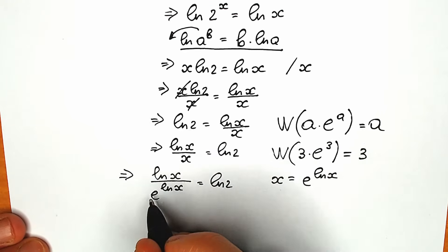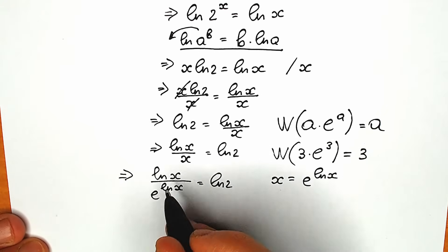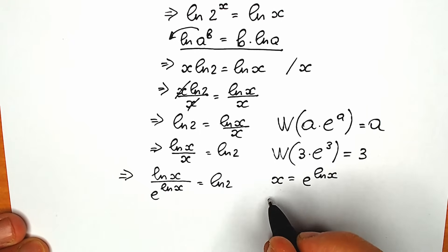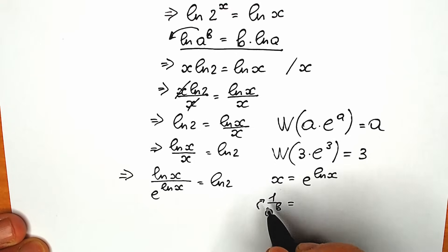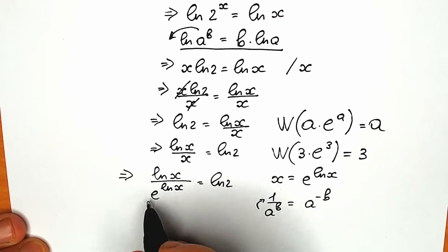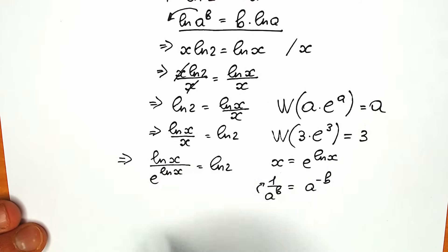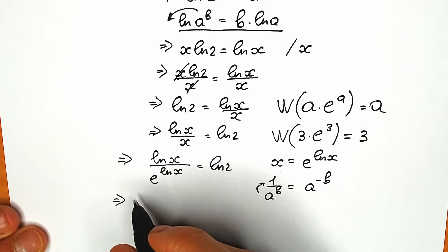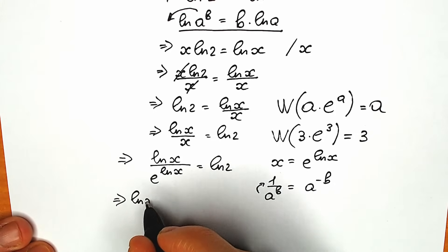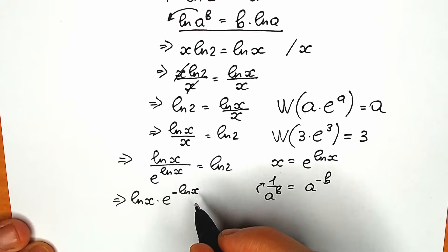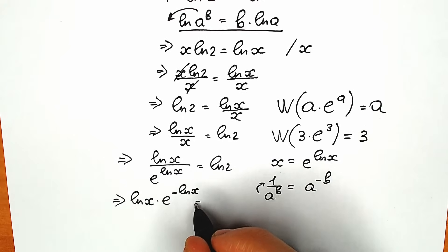Now let's move the denominator to the numerator by changing the sign. When we have 1 over a to the power b, bringing it to the numerator gives a to the power minus b. So the e to the power natural log x becomes e to the power minus natural log x, giving us: natural log x times e to the power minus natural log x equal to natural log 2.